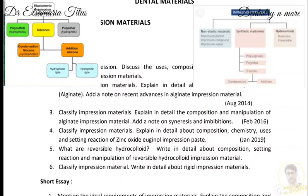We will write the composition and setting reaction of each elastomeric impression material with subheadings: polysulfide, polyether, addition silicone, and condensation silicone. Coming to the polysulfide — also known as mercaptan or thiokol — it is composed of a base paste and a reactor paste. The base paste consists of 80 to 85 percent liquid polysulfide polymer and 16 to 18 percent inert fillers.